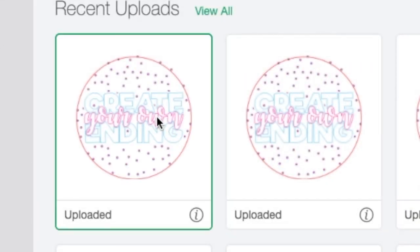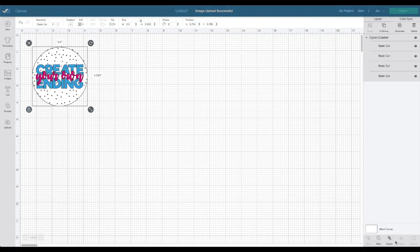Then you're gonna select from your recent uploads and click insert. Now you can see that it is coming in at the correct size which is 3.5 inches by 3.5 inches, which is the circumference of the coaster that we are going to use.